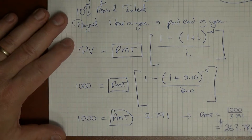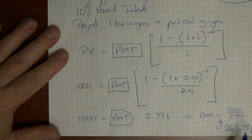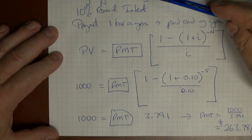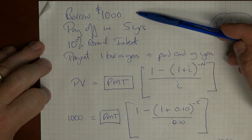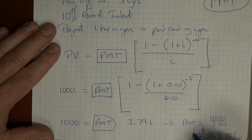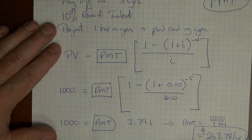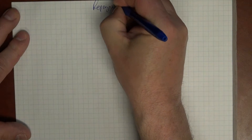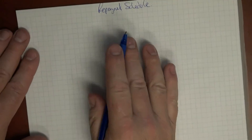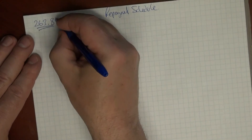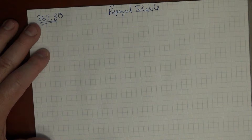Think about whether that makes sense: $263 times 5 is about $1,300 in round numbers. The amount originally borrowed was $1,000, so $1,300 seems reasonable — the $300 will be accumulated interest. We've calculated our payment to be $263.78. Now we want to look at the repayment schedule. I'm going to round the payment to $263.80 for the sake of building the schedule.